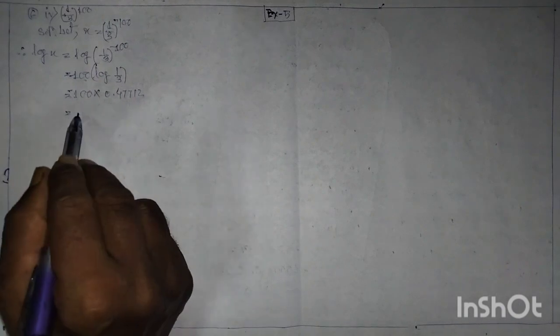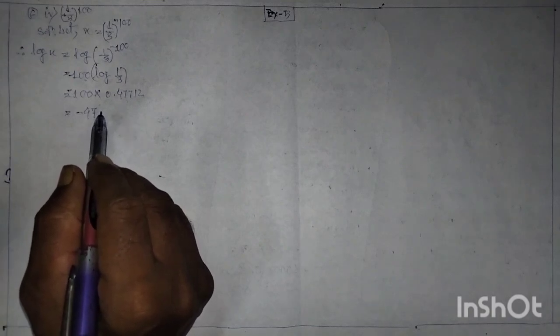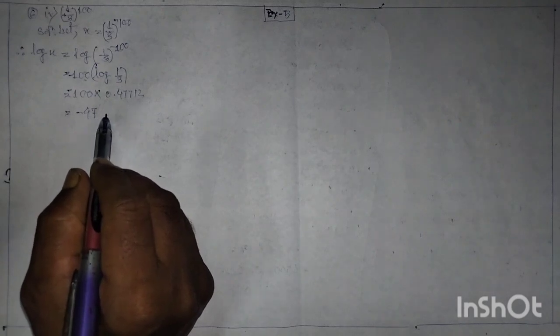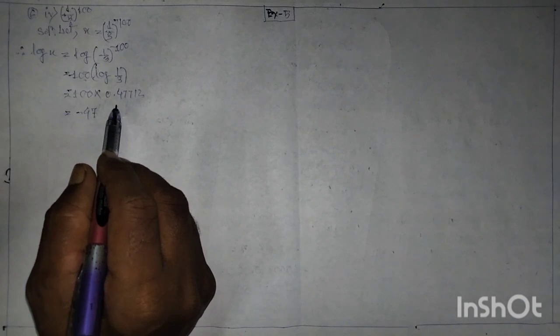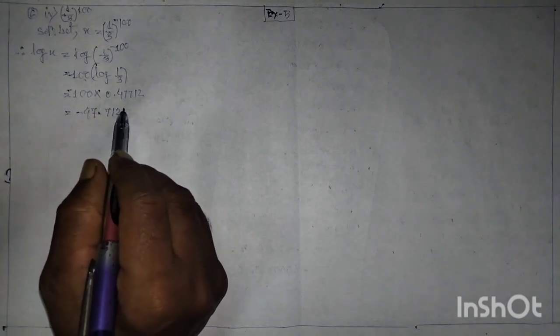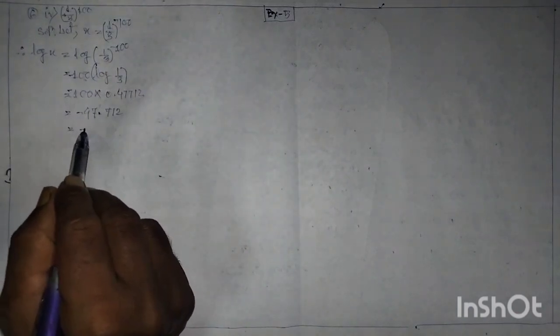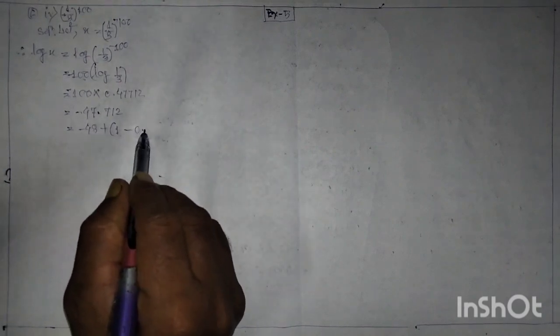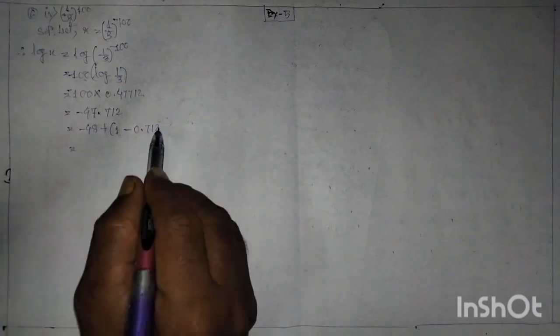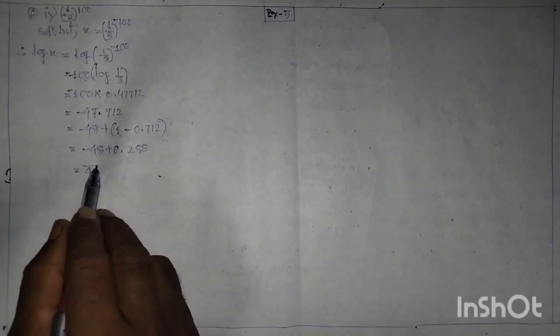This equals minus 4 × 0.4771, giving minus 47.712. This is equal to minus 40 plus 1 minus 0.712, which is equal to minus 40 plus 1.288, giving characteristic minus 40 and mantissa 0.288.